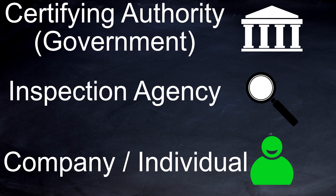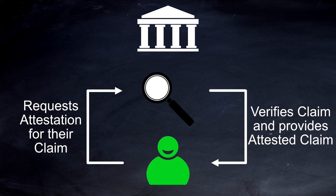In this example there are three different entities: a certifying authority, which may be linked to a government — an example of this would be UKAS; an inspection agency, which is an entity that will inspect other entities and verify they are meeting a certain criteria; and finally, a company or individual. For most people, the interaction between the company and the inspection agency looks like this — the company requests attestation for their claim.